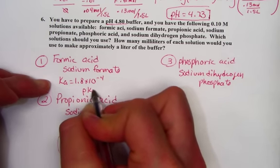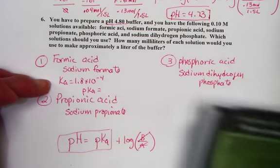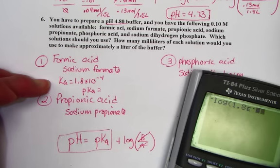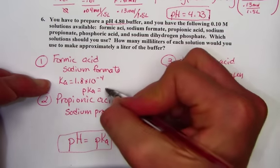1.8 times 10 to the negative fourth. Taking the negative log of that for pKa: negative log 1.8 E negative 4 gives us 3.74 pH units.